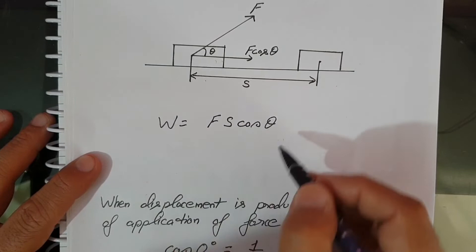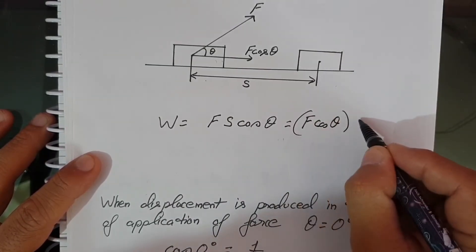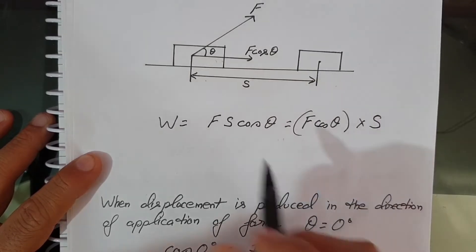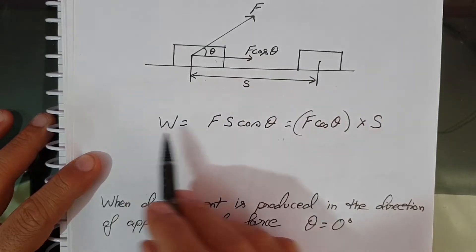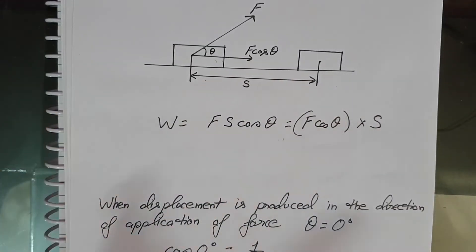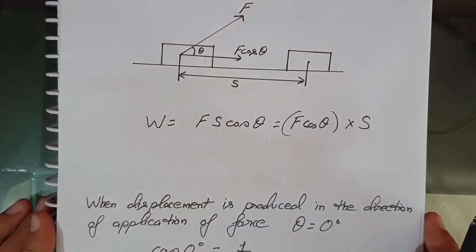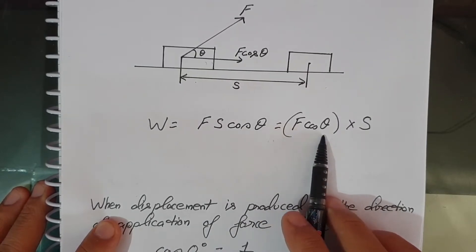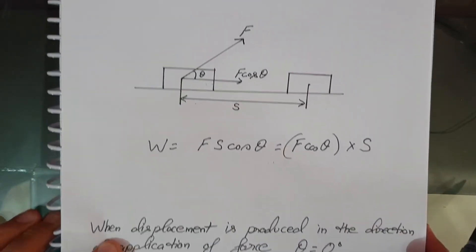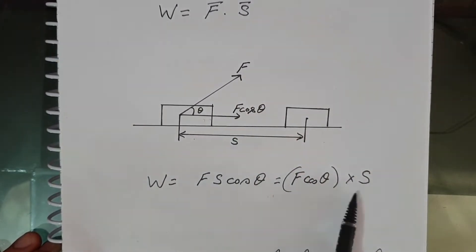The formula Fs cosθ can be written as (F cosθ) × S. Here F cosθ is the component of force in the direction of displacement, and S is the magnitude of displacement. So work done, when there is an angle between the applied force and the displacement, is basically the component of force in the direction of displacement times the magnitude of displacement.